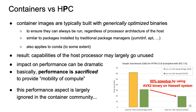Let's talk about how container images are typically built, while paying specific attention to the performance aspect. One of the major advantages of containers is that you can build them once and then run anywhere, which is sometimes referred to as mobility of compute in an HPC context. In order for this to work, container images must include generically optimized binaries to ensure that they can run on a wide range of hosts, no matter which specific CPU is available. This implies that a lot of the capabilities provided by the host CPU may not be used at all, for example the AVX2 functional units on an Intel Haswell processor. The impact on performance can be dramatic — a 60% speedup was observed for a simple FFTW benchmark when using a binary specifically built for an Intel Haswell system, rather than using a binary that works on the previous generation processor. By using container images that include generic binaries, we are basically sacrificing performance to provide mobility of compute. Can we do better?